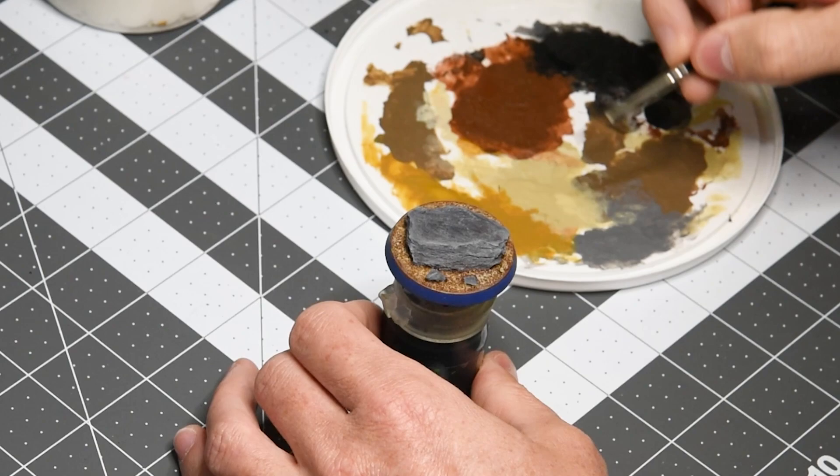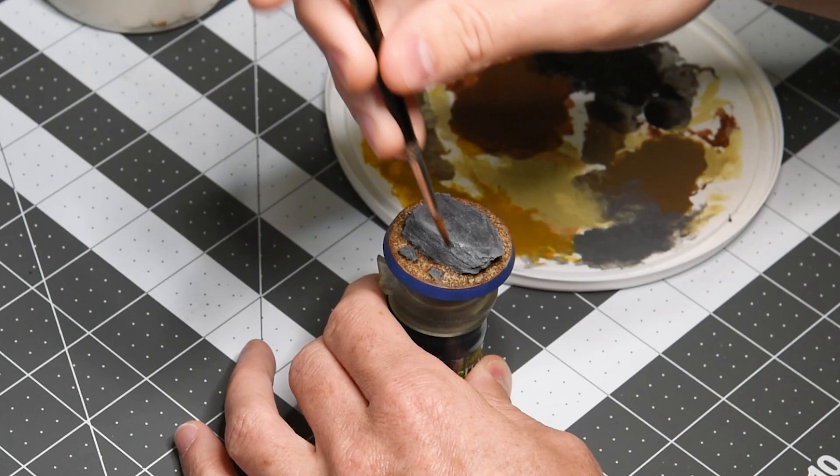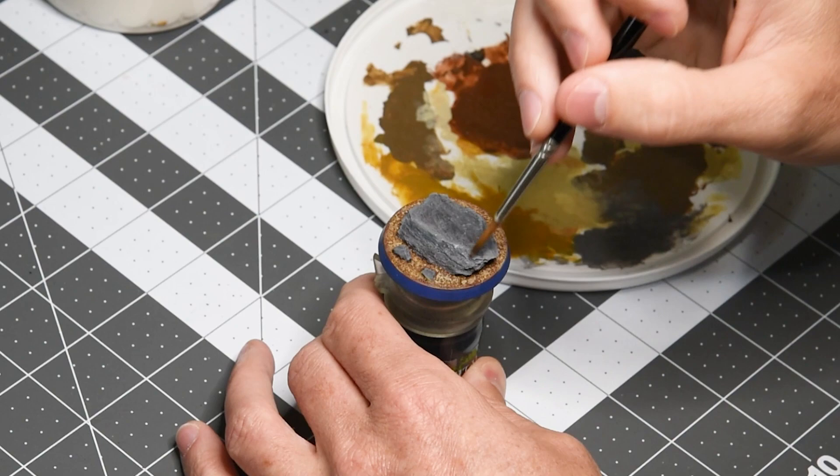And we're going to use this Ushabti Bone in a second here on the rock after we finish applying to the sand. And this is going to tie both the sand and the rock together, making the whole thing really look cohesive and planned.